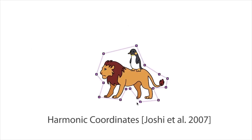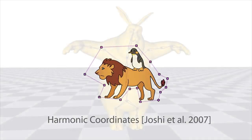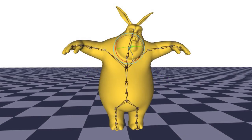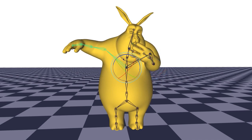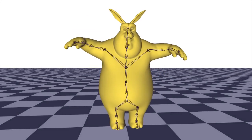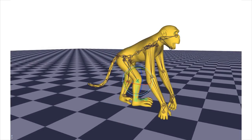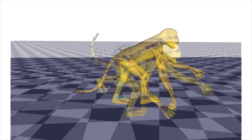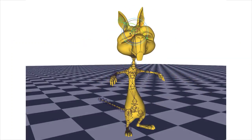Our method is agnostic to the choice of skinning weights, and we also support cage-based deformations. Our method extends to 3D surfaces, where we find optimal positions for Catmull-Clark subdivision meshes. Exploiting our linearity, a GPU implementation of our technique would theoretically outperform standard skinning, untethering vertex shader complexity from the number of handles.